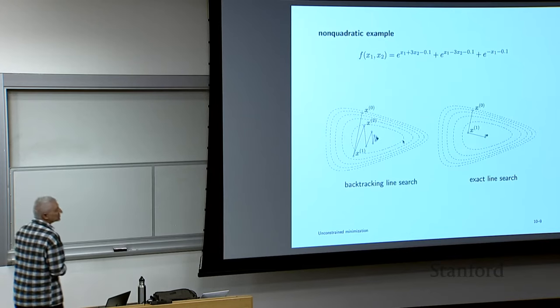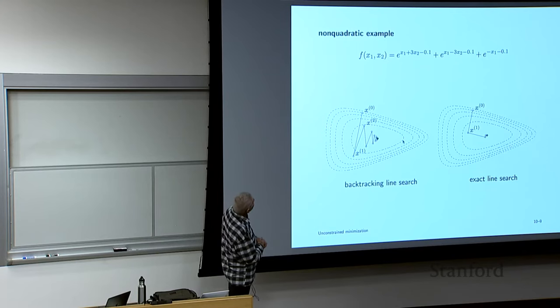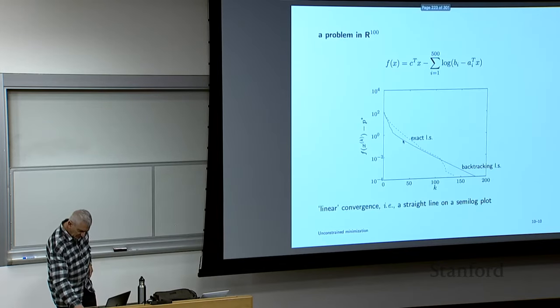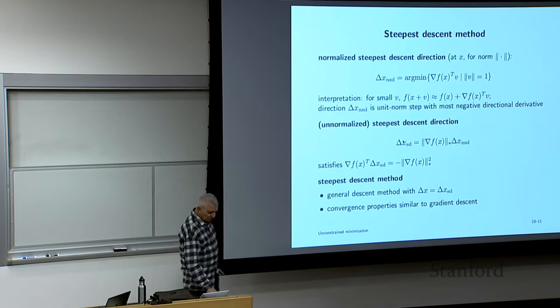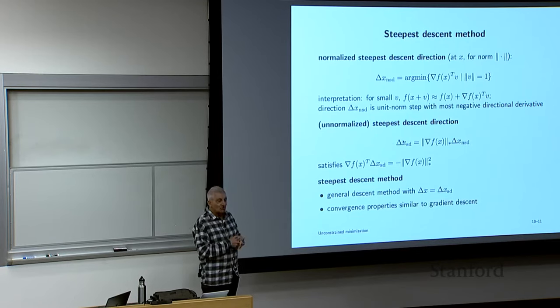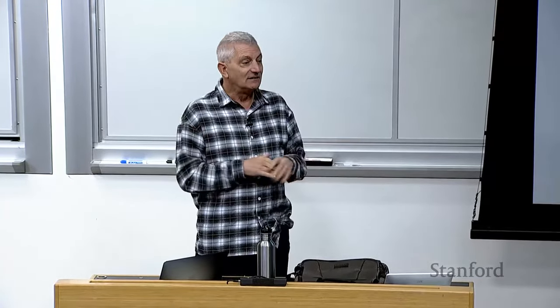This is just an example in two dimensions to show you that you get zigzagging. The conclusion is: depending on the problem, if your sublevel sets are very well conditioned — spherical, symmetric, isotropic — then gradient descent is fine.